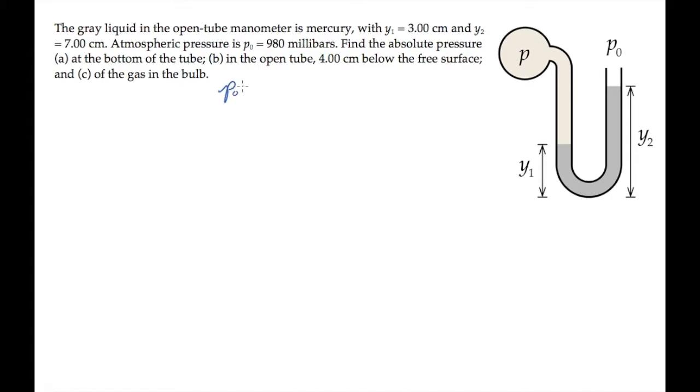The atmospheric pressure in this case, p0, is 980 millibars. A bar is defined as 10 to the fifth Pascals, so this makes p0 equal to 0.980 times 10 to the fifth Pascals, or 9.80 times 10 to the fourth Pascals.